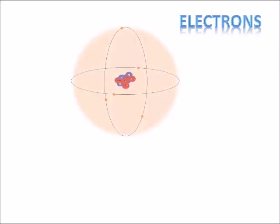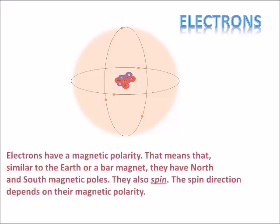Let's talk about those electrons. Electrons have a magnetic polarity — similar to the earth or a bar magnet, they have a north and a south magnetic pole. They also spin as they orbit the nucleus. The spin direction, whether clockwise or counterclockwise, depends on the magnetic polarity of the electron.